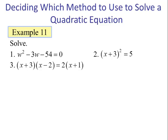Example 11. Solve: Number 1: w² - 3w - 54 = 0. Number 2: (x + 3)² = 5. And number 3: The product of (x + 3) and (x - 2) equals 2 times (x + 1).